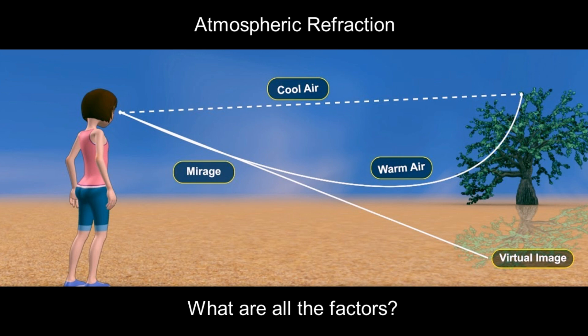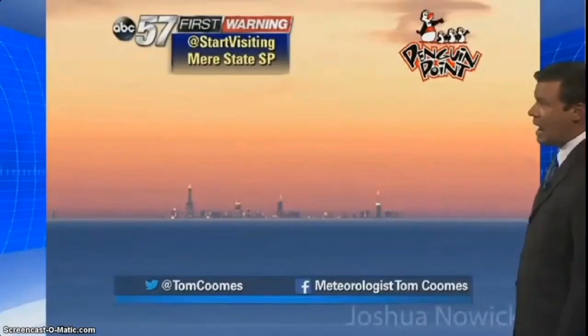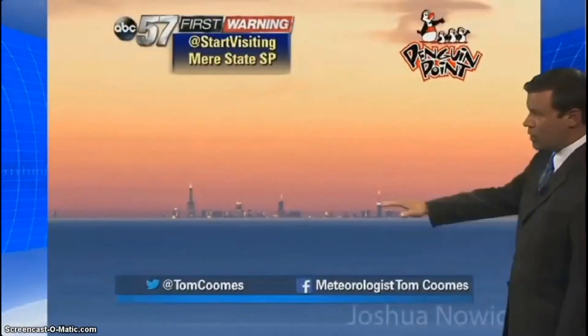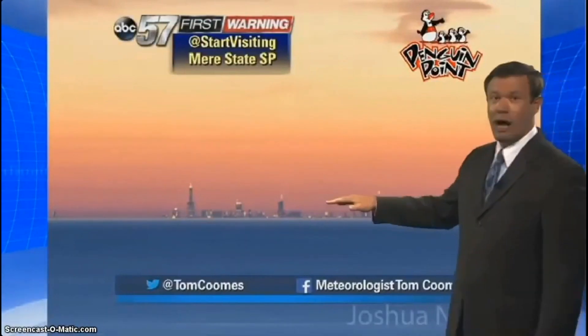By now many of you have seen countless examples of flat earthers making long-distance observations that would be impossible on the globe. Globeheads will try to debunk these observations using atmospheric refraction as an excuse. And what you're seeing here is a mirage.